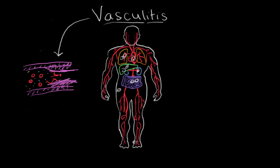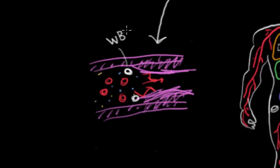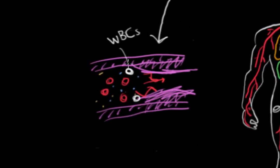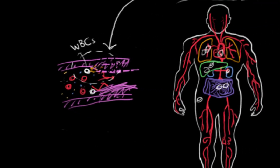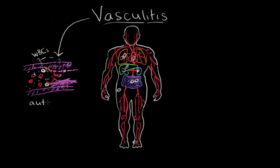Essentially this damage is caused by the immune system. White blood cells mistakenly release small molecules that can damage the blood vessels. Essentially the immune system makes a mistake and thinks that blood vessels are foreign. So vasculitis is an autoimmune disease.